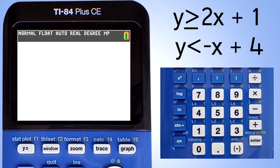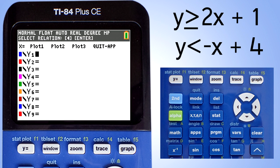Let's begin. Press this Y equals key at the top left of the keyboard. This screen appears. Press the left arrow key here. This black rectangular box will flash around here.